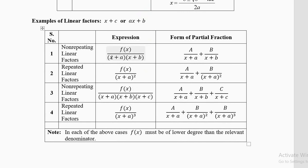To summarize the table: for two non-repeating linear factors, use A/(x+a) plus B/(x+b). For a repeated linear factor squared, use A/(x+a) plus B/(x+a)². For three factors — whether three independent non-repeating or one repeated three times — the structure extends accordingly. You can also have combinations such as four factors with two repeating and two not, which we will discuss another time.